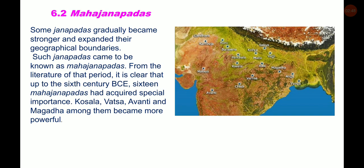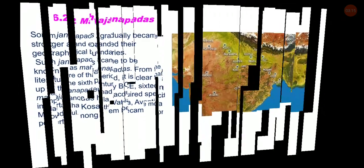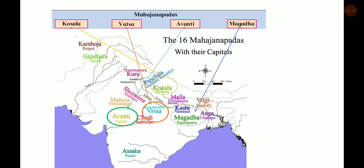From the literature of that period, it is clear that up to the 6th century BC, 16 Mahajanapadas had acquired special importance. You can see in the picture all 16 Mahajanapadas with their capitals. Among them, Kosala, Vatsa, Avanti and Magadha became more powerful.